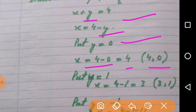4 is the value of x, 0 is the value of y. Similarly in the second case put value of y as 1, so x is equal to 4 minus 1 that is 3. The ordered pair will be 3 comma 1.